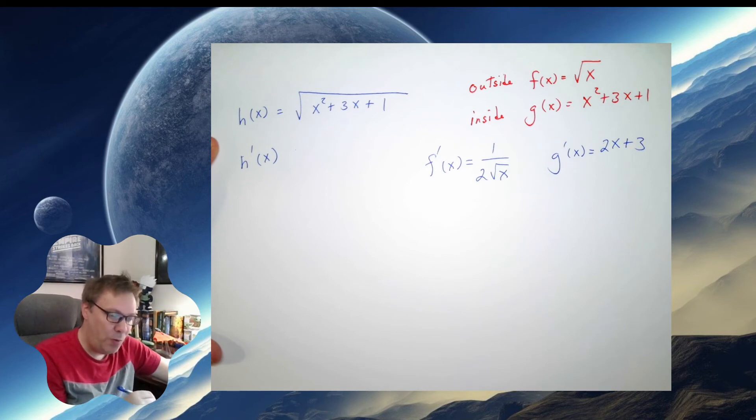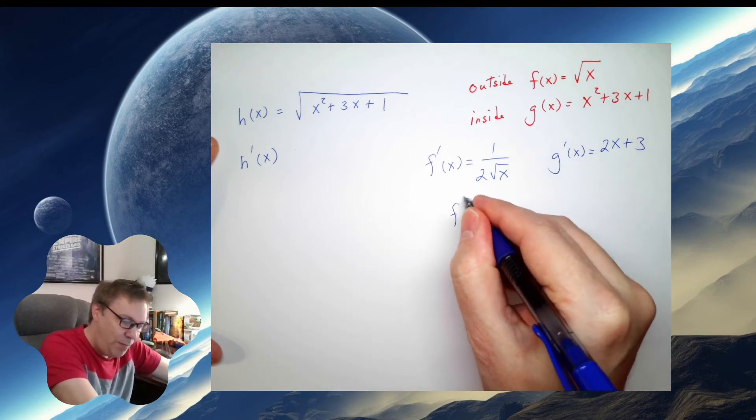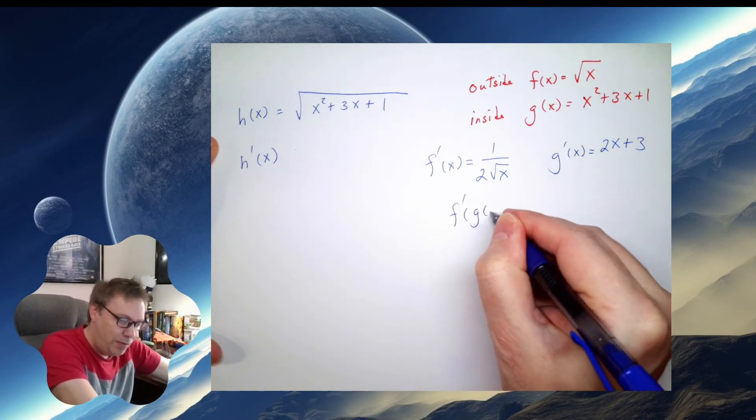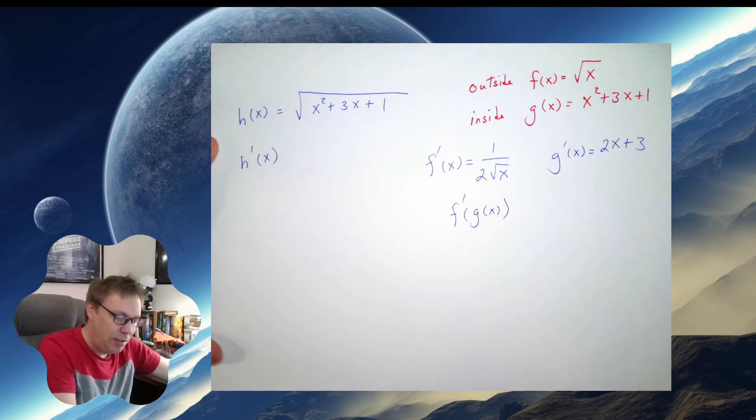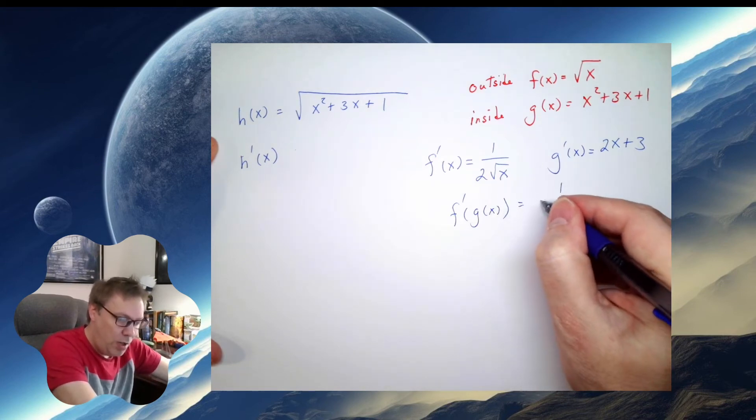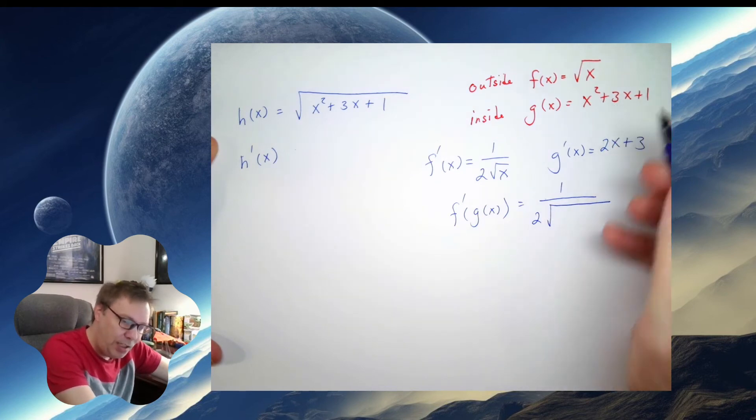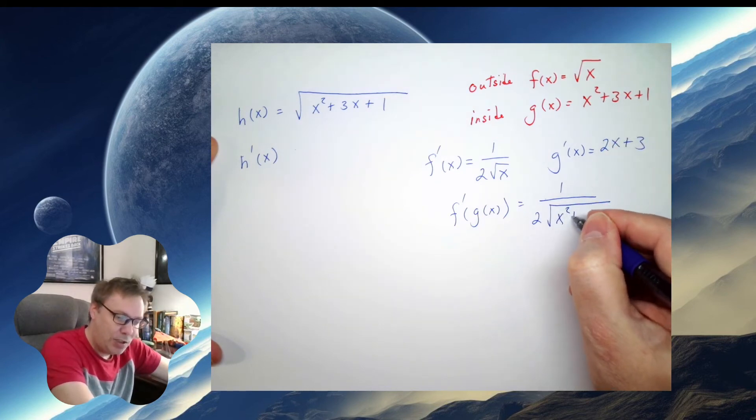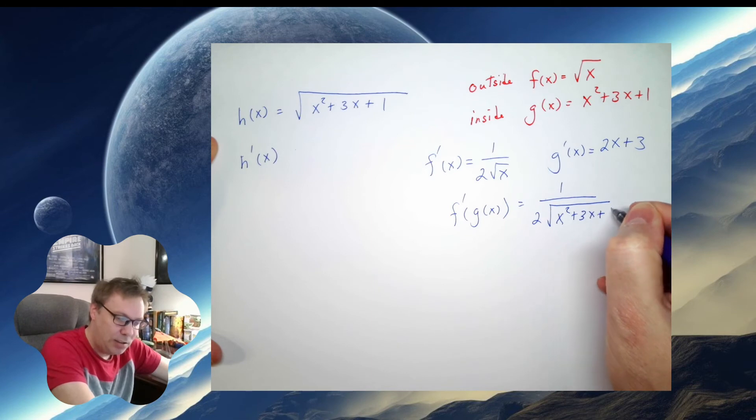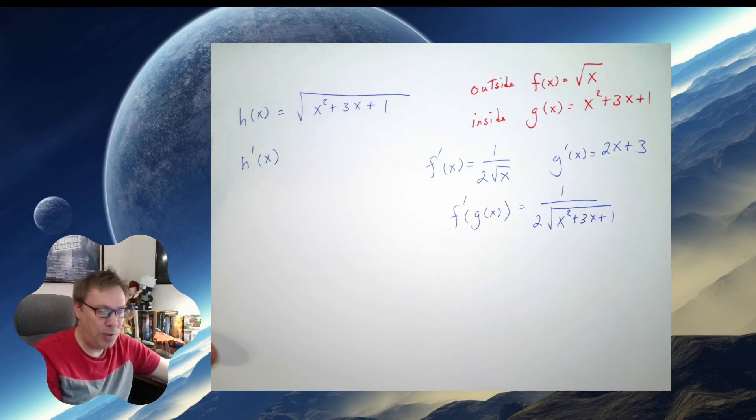But remember in my formula, I don't just need f prime of x. I need f prime of g of x. So this is going to look like 1 over 2 root, and now I'm going to put in g of x: x squared plus 3x plus 1.